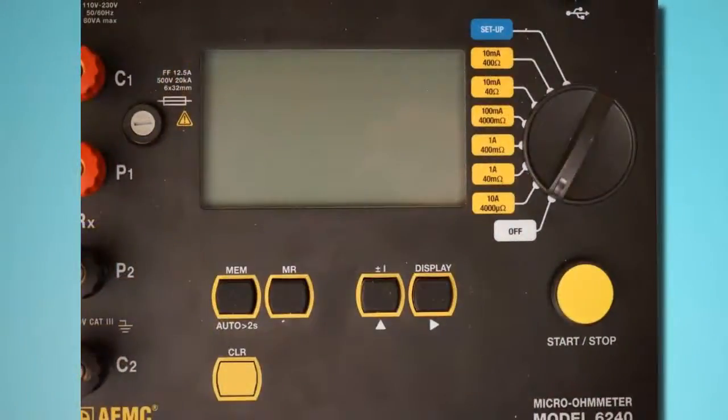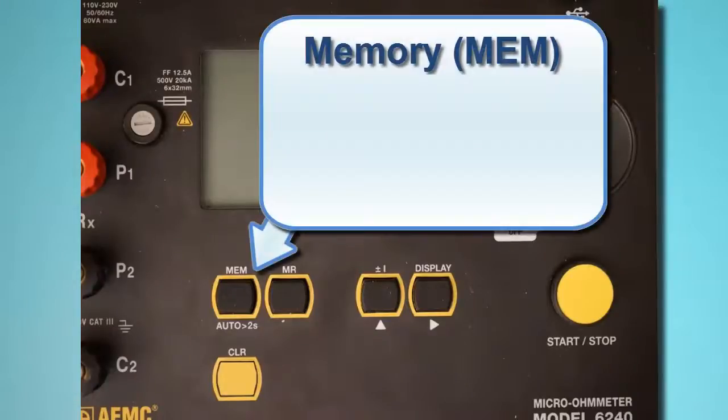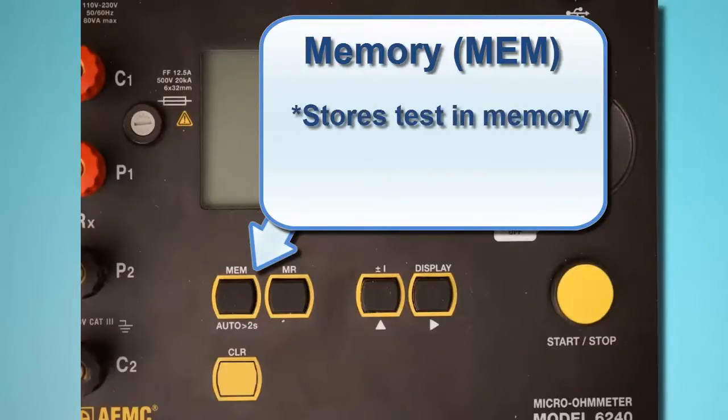Before we begin, let's take a moment to get acquainted with the Model 6240 user interface. Below the LCD are five function buttons. The Memory button, labeled MEM, stores the test in the instrument's memory, where it can be subsequently viewed on the LCD and downloaded to a computer running DataView. This button also initiates Auto Mode, which we explain later in this video.